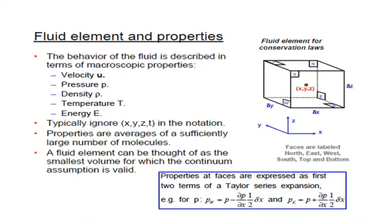We are going to study the fluid element and its properties. The macroscopic properties of a fluid are termed as velocities, pressure, density, temperature and energy. Velocity is represented as U, pressure as P, density as rho, temperature as T, and energy as E. The properties are averages of a sufficiently large number of molecules, and it is treated as a continuum medium.